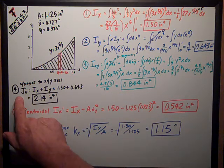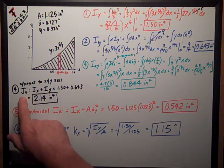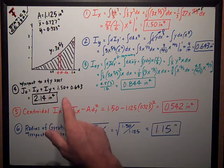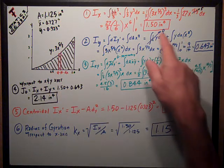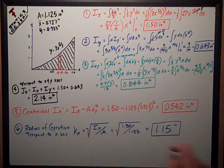Now, fourth part was the polar moment of inertia, J0, that's just equal to the sum of ix and iy. Let's just add these two numbers together, 1.5, 0.643, and I get 2.14 inches to the 4th.